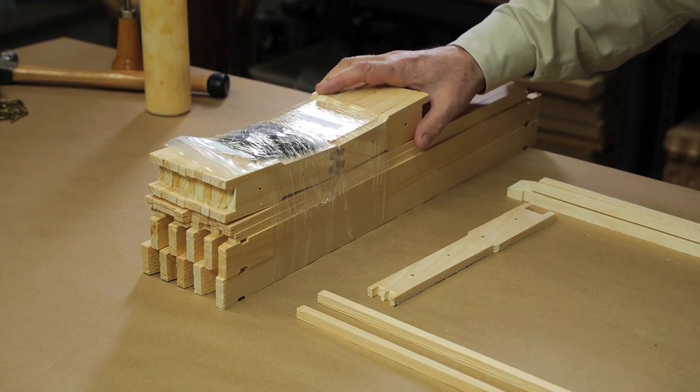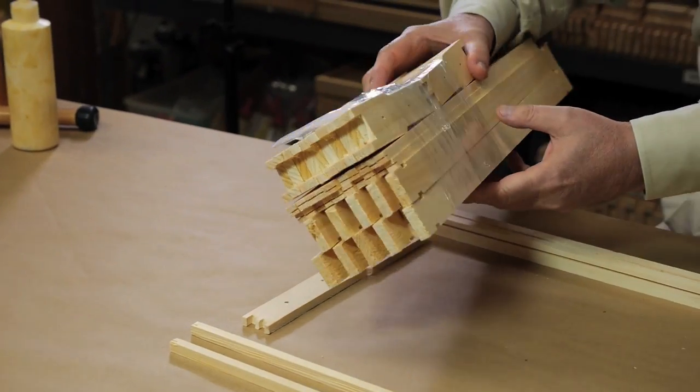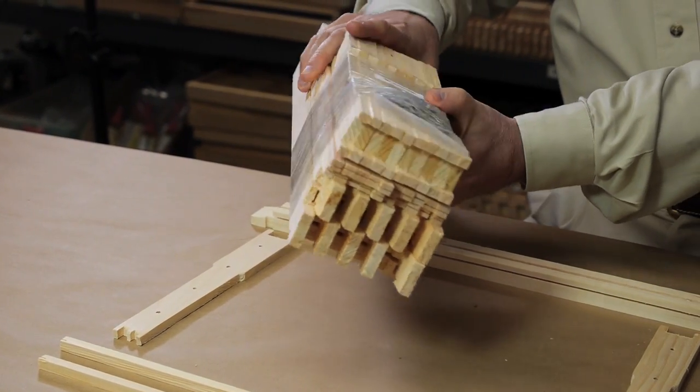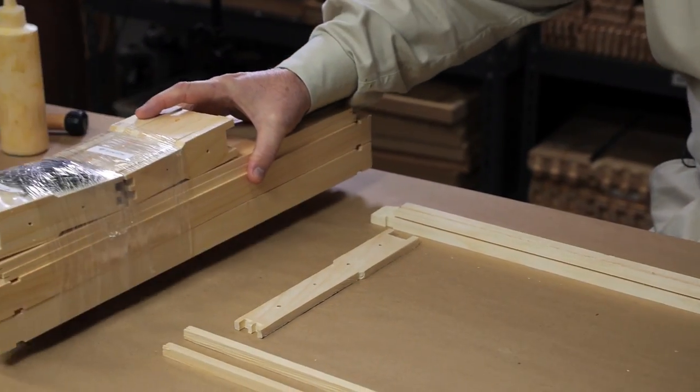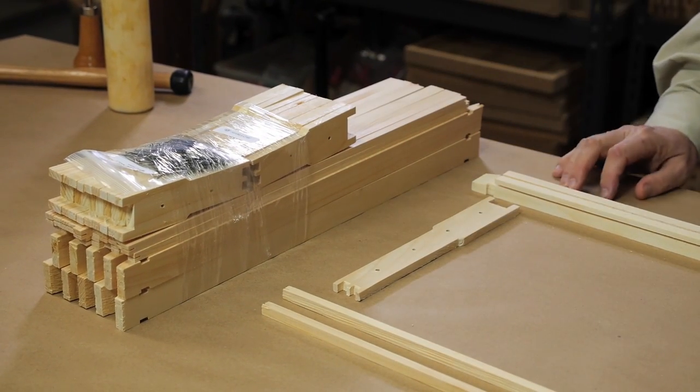Wooden frames come as a kit to be assembled. They vary a bit from vendor to vendor, but each frame, regardless of the maker, is composed of the following parts.